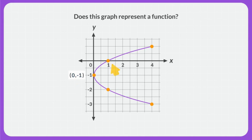Next, I see that the point here has an x value of 1 and a y value of 0. I also see the point here has an x value of 1 and a y value of negative 2. That means the input of 1 has an output of 0 and an output of negative 2.